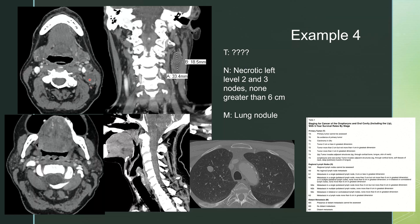Example four: on the CT scan, we see necrotic left level two lymph nodes extending to level three. The largest measures greater than three centimeters in its maximum dimension, but none measure greater than six centimeters. We don't see a primary lesion on these images evaluating all of the oropharynx. However, at the lung apices, we see a mass that could possibly represent a metastatic lung nodule. So we have a TX tumor — we're not sure where the primary tumor is — lymph nodes greater than three but not greater than six centimeters, and at least one distant metastasis.